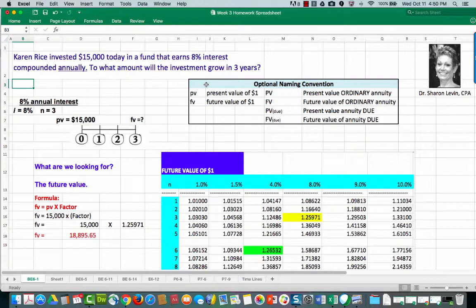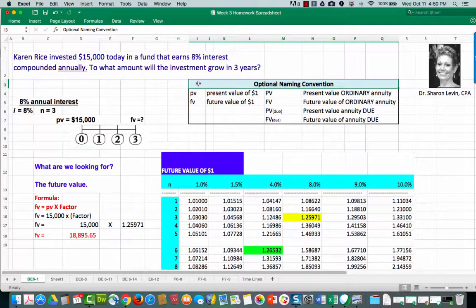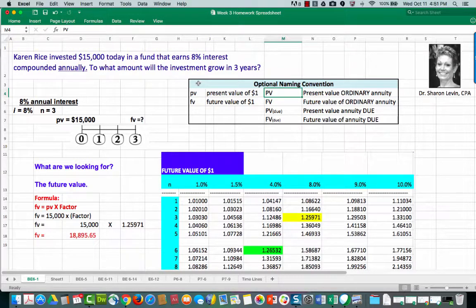Over on the right side under the blue highlight you see what I call optional naming convention. I use this naming convention to help me stay organized when working time value of money problems. Note that I will use a lowercase pv and a lowercase fv for the present value and the future value of one, also known as the present or future value of a lump sum. And I will use capital letters for the present and future value of an annuity.